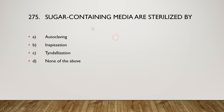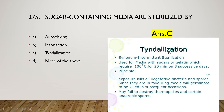The last question: sugar-containing media are sterilized by autoclaving, inspissation, Tyndallization, or none of the above? The right answer is option C, Tyndallization. This process, also known as intermittent or fractional sterilization, is used for media with sugars or gelatin, requiring 100°C for 20 minutes on three successive days. This kills all vegetative bacteria and spores but may fail to destroy thermophiles and certain anaerobic spores. Thank you for watching.